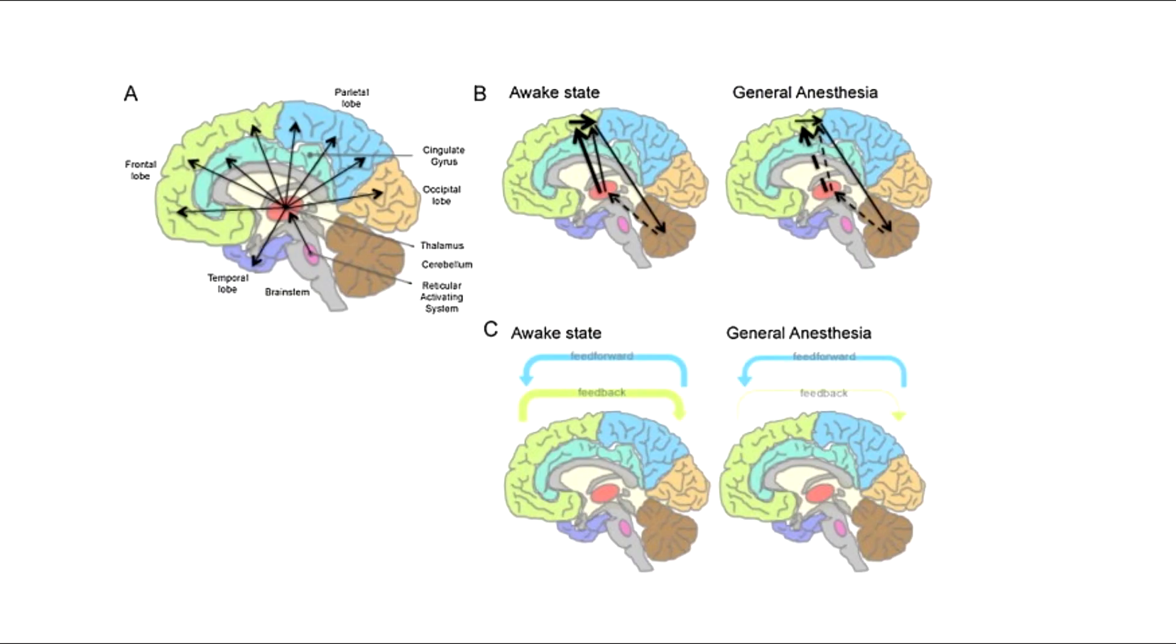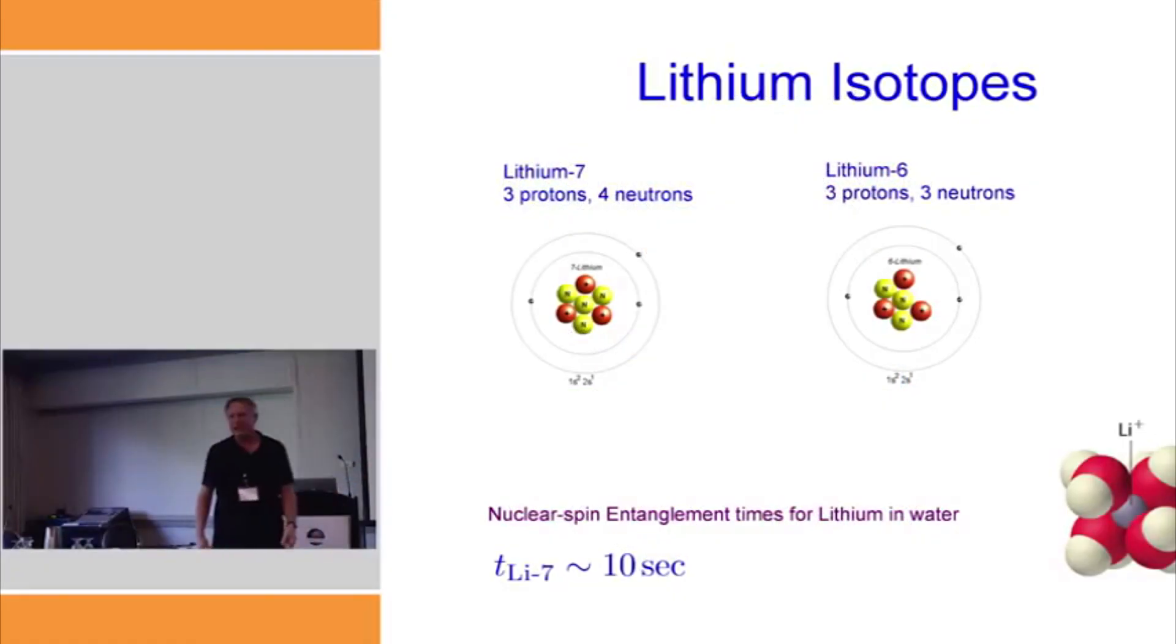Secondly, it is interesting as this is tied directly to turning consciousness on and off itself, as what was being tested are the anesthetic properties of xenon. Whereas with the lithium isotopes, it merely affected the cognitive behavior of the rats rather than turning them off altogether.